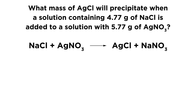Those two compounds are reacting, and that is going to produce a silver chloride precipitate. Our Ag and our Cl are taken care of, but that leaves the sodium ion and the nitrate ion, so we're also going to be producing sodium nitrate. That is our chemical equation, and it also happens to be balanced — we just have one of everything, so we don't have to add any coefficients.